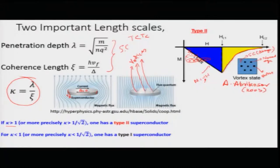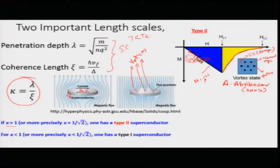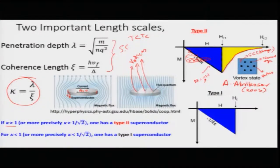These are Type 2 superconductors, which occur when kappa is greater than 1 by root 2. Abrikosov showed that the vortices generated above Hc1, between Hc1 and Hc2, organize themselves into a hexagonal lattice — a very ordered periodic configuration. This is the vortex state. If kappa is less than 1 by root 2, you have the conventional Type 1 superconductor, where at Hc superconductivity is lost entirely — there are no vortices.